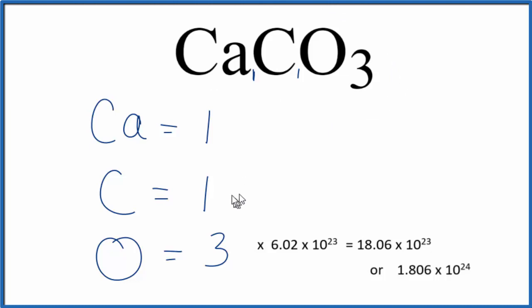If we wanted to know the number of carbon atoms, that'd be one times Avogadro's number. So that would just be 6.02 times 10 to the 23rd.